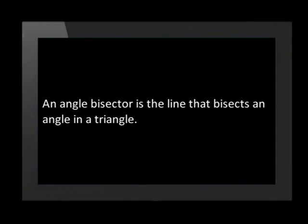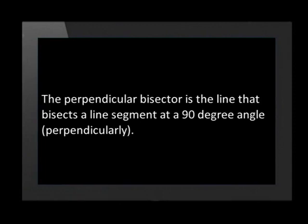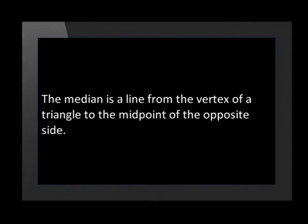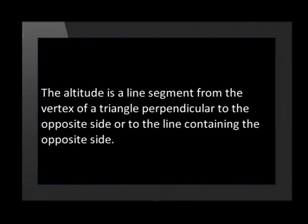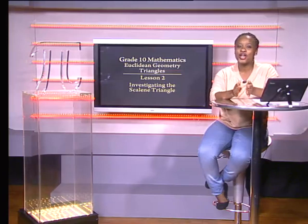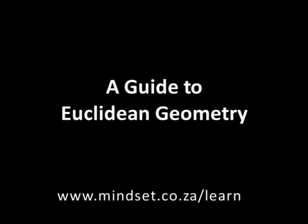We have discovered many new interesting terms while analyzing scalene triangles. Let's recap: we can construct the following lines in a scalene triangle — angle bisector: the line that bisects an angle of a triangle; perpendicular bisector: the line that bisects a line segment at a 90-degree angle; median: a line from the vertex of a triangle to the midpoint of the opposite side; altitude: a line segment from the vertex perpendicular to the opposite side. Thank you for joining us — don't forget to watch the task video and visit our website at www.mindset.co.za/learn.